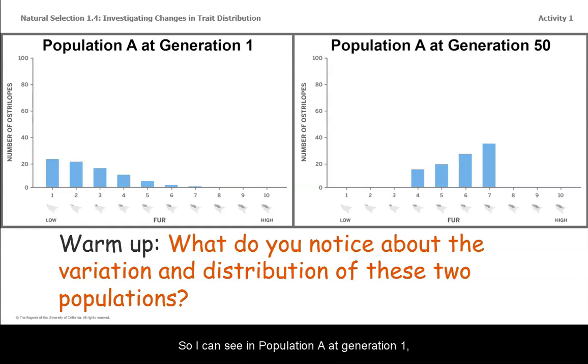I can see in population A at generation one that the distribution shows that most of the australopes have low amounts of fur. The distribution at generation 50, I can see that most of the australopes have medium to high amounts of fur, with seven being the most common trait.